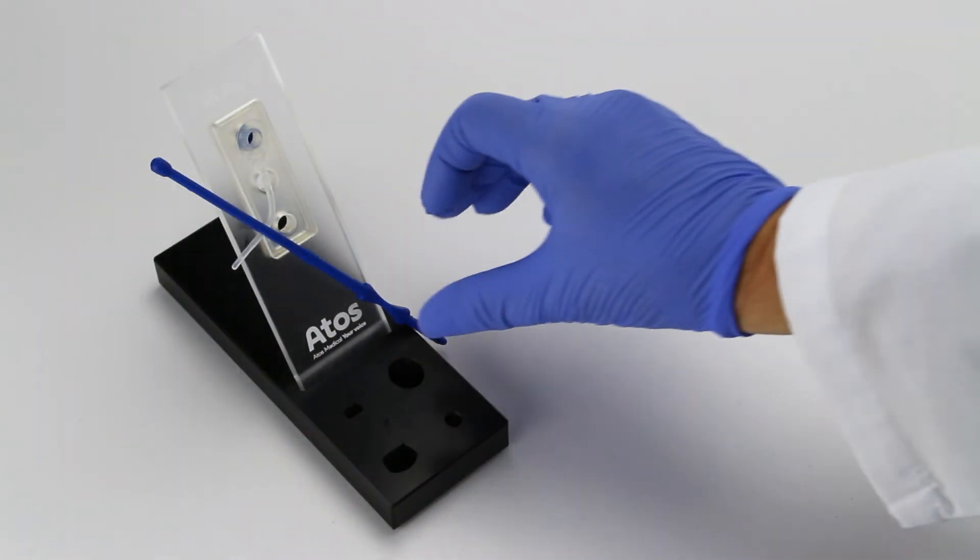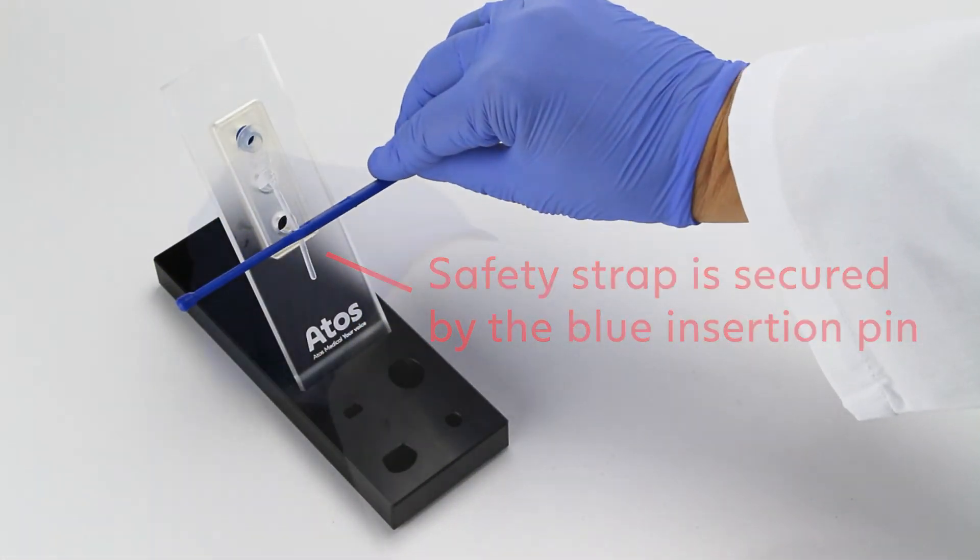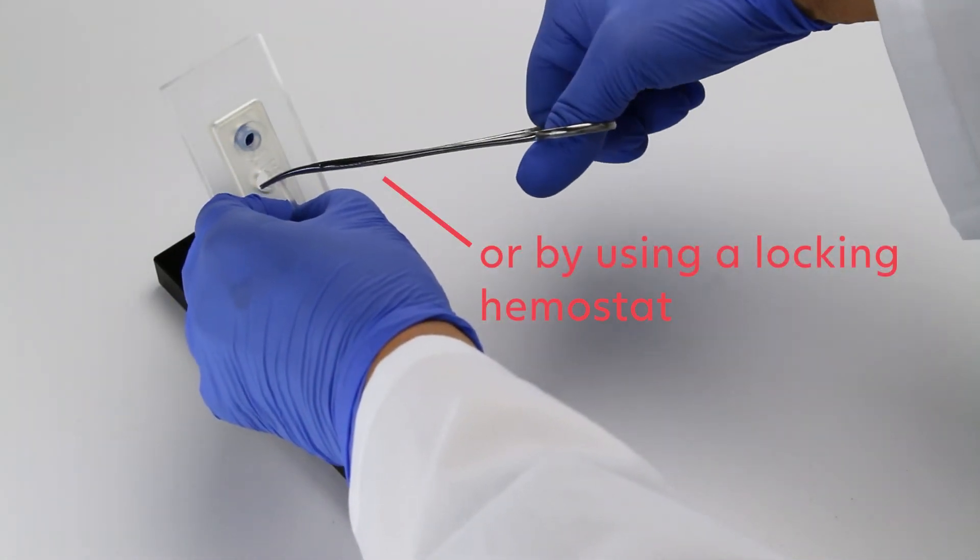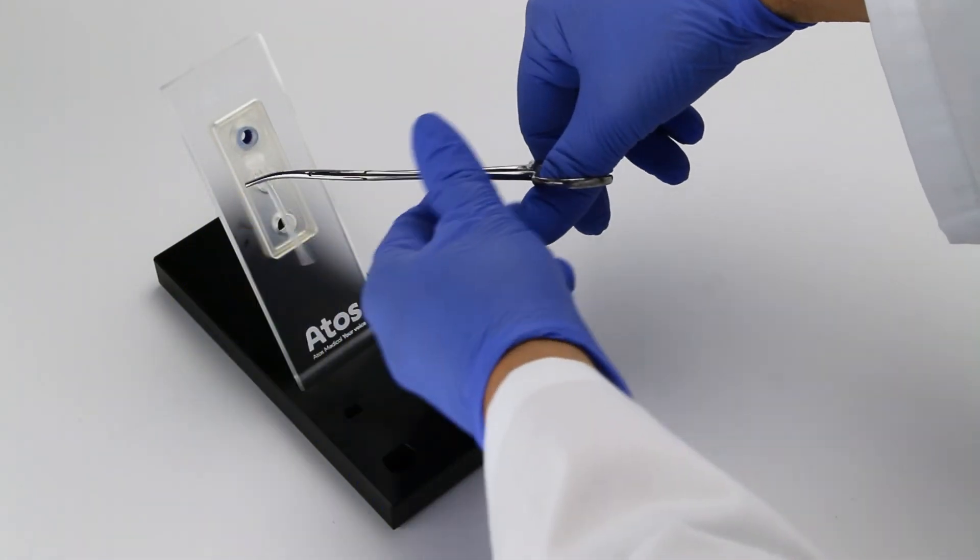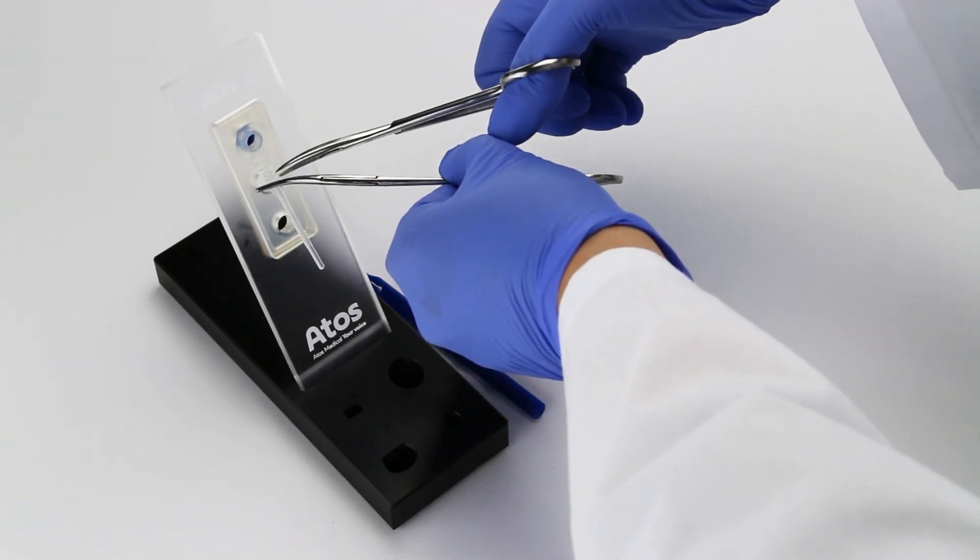Prior to cutting the safety strap, make sure it is secured with either the blue insertion pin or a locking hemostat. Then cut off the safety strap using scissors on the outer edge of the tracheal flange.